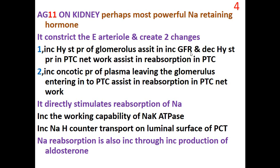The effects of angiotensin 2 on the kidneys: it is perhaps the most powerful sodium-retaining hormone of the body. Its effect is preferential on the efferent arteriole — it constricts the efferent arteriole and creates two changes. There will be an increase in the hydrostatic pressure of the glomerulus, increasing GFR, and at the same time a decrease in the hydrostatic pressure in the peritubular capillary network, which assists reabsorption there.